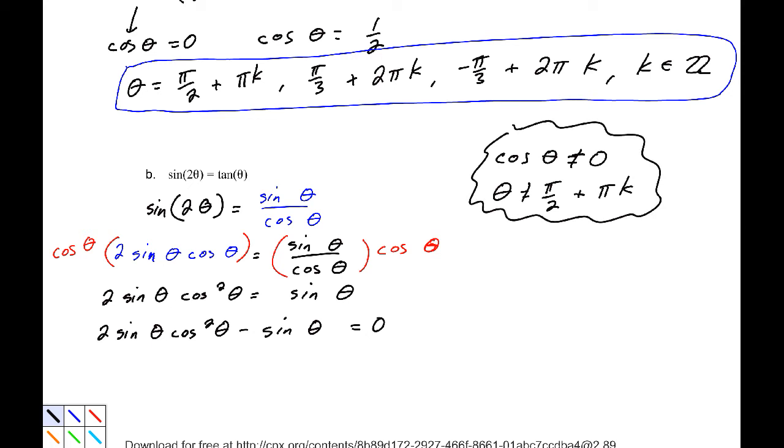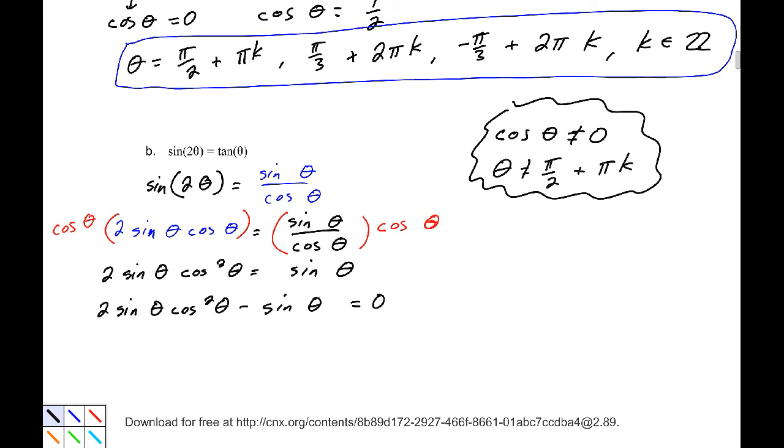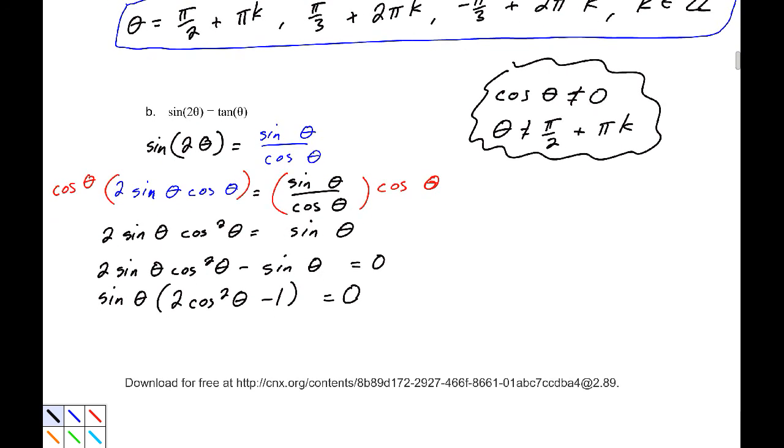Now we can go ahead and factor this. And as long as we're looking out for that potential problem of extraneous solutions, then we should be all right. So this will be sine theta, if we factor that, 2 cosine squared theta minus 1 equals 0. And we know that sine theta is equal to 0 whenever we have some multiple of pi. And again, you can verify that from your unit circle.